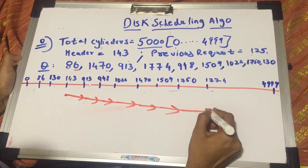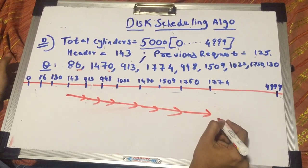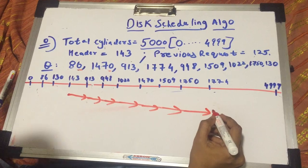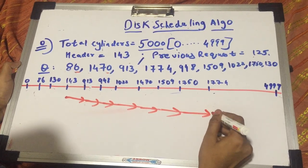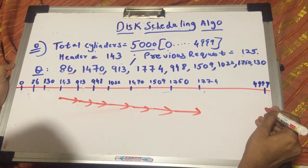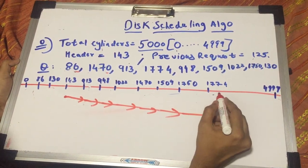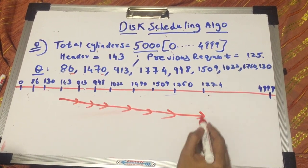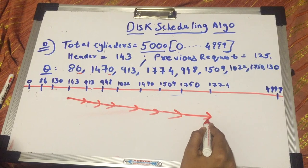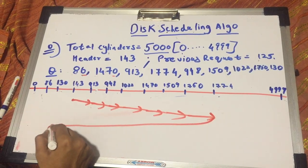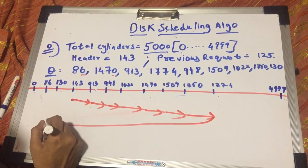If you remember in the SCAN algorithm, we went up to 4999 and then we came back down. But here, you'll just go to 1774 and then while coming back, you will serve the request at 130 and 86.